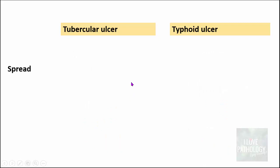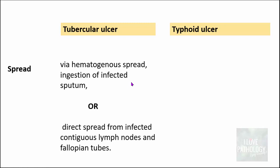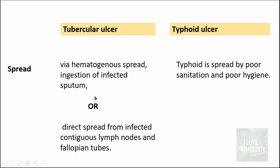How do these ulcers result? The spread of tuberculosis leading to ulcer formation is via hematogenous spread — particularly by ingestion of infected sputum, or it can be direct spread from infected contiguous lymph nodes and fallopian tubes. Typhoid ulcers, on the other hand, spread by poor sanitation and poor hygiene, basically via the feco-oral route of transmission.